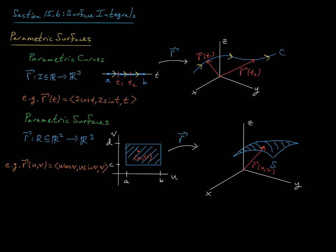And as we let uv vary over some region in the plane now, this vector r, which you can think of as a position vector, is going to trace out points on a surface in three-dimensional space.